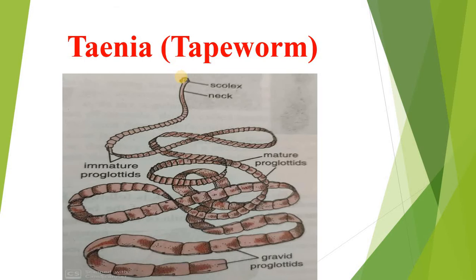Taenia solium is a common endoparasite found in the intestine of man who eats pork — the flesh of pig — as food.